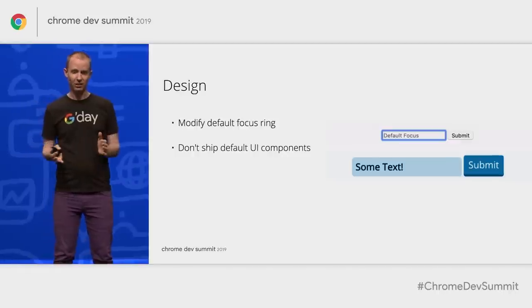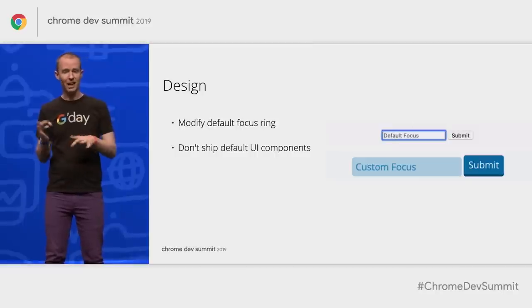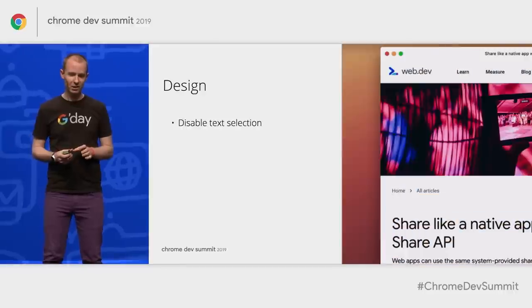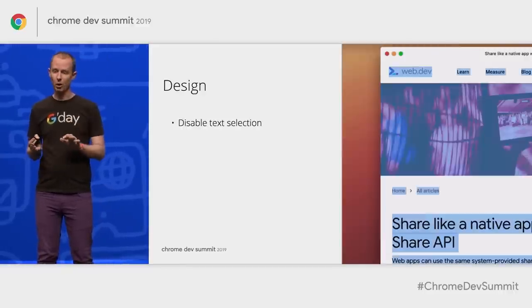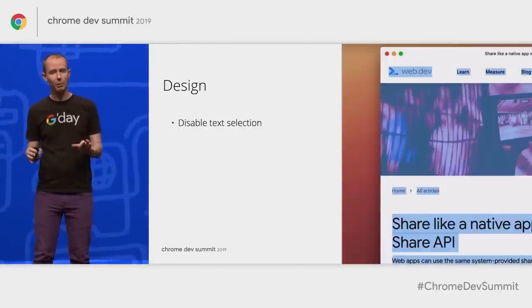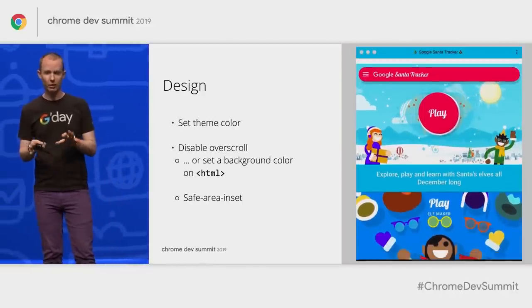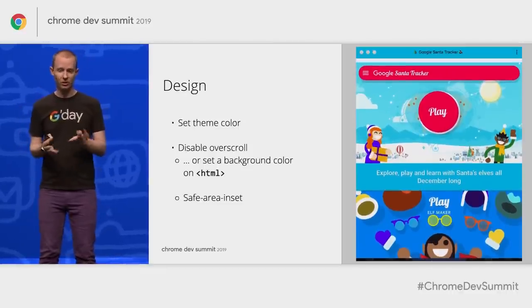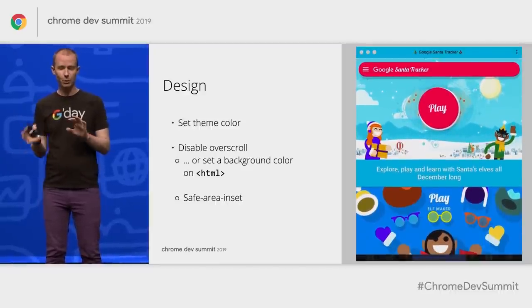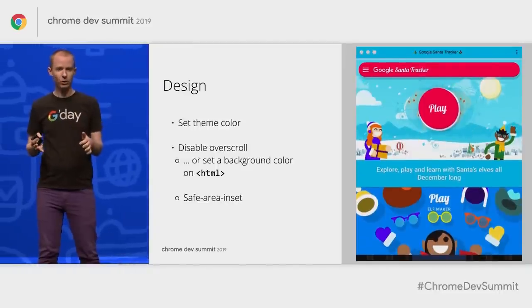A few tips to make your site feel more native. Focus rings let your user know where their cursor is — a basic accessibility feature you should keep, but the default ring is a telltale sign of the web, so customize it, and this applies to form elements as well as links. Text selection is also probably something you want to disable, especially on UI components, because it's not an expected behavior of installed applications. Set a theme color — this refers to the window color of your app. And disable overscroll, which can cause three contrasting colors to show up; at minimum, make sure your HTML tag is set to a reasonable background color.